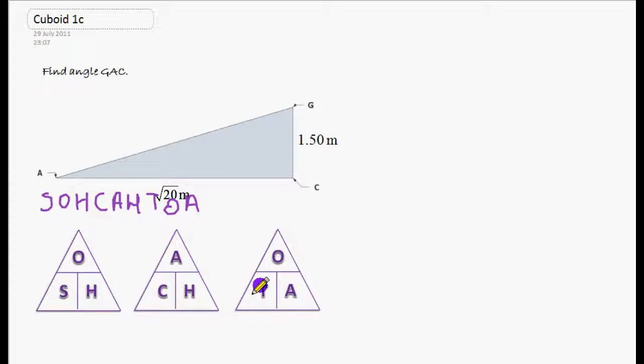The formula we're going to use in this case—we've got to label our triangle first and work out which angle we're dealing with. The angle we're dealing with here is what we want to find: GAC. We've got the opposite, which is opposite the angle: 1.5.